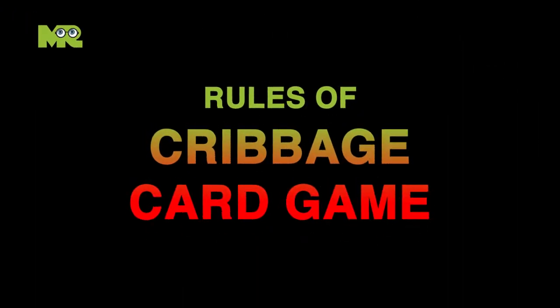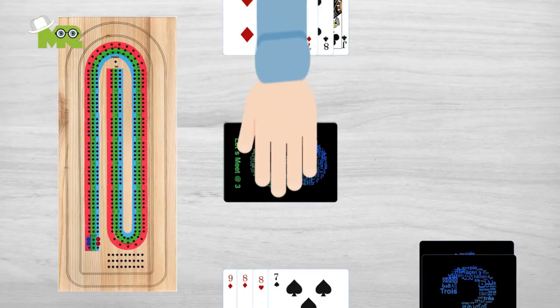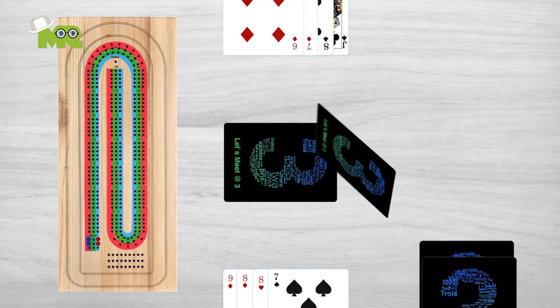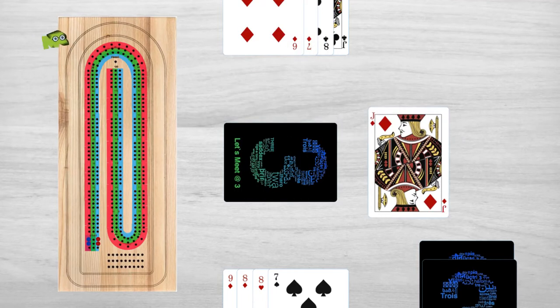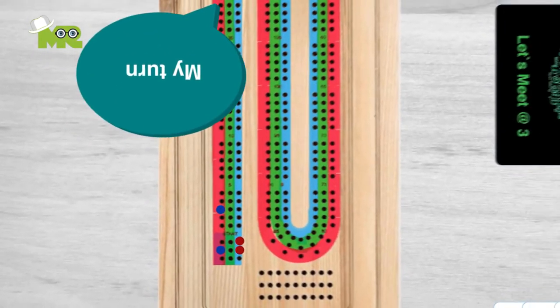Rules of cribbage card game. The deck is then cut again by the non-dealer and the top card of the bottom half, known as the starter card, is revealed by the dealer. If the starter card is jack, the dealer begins the game with two points.